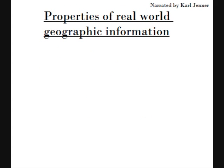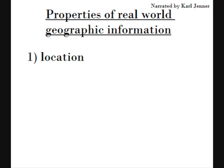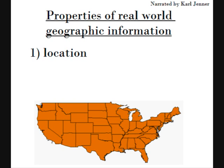Because a GIS deals with geographically referenced information, we should take some time to examine the properties of all real world geographic information. The first property of all real world geographic information is location. We can identify the location of objects by simply looking at a map and describing the locations of objects in relation to one another, or through some special coordinate system that provides locations of objects through its coordinates in space. For example, we can identify the location of different states on this map.